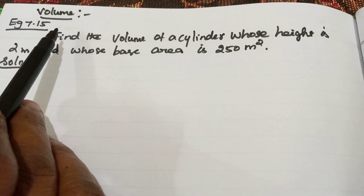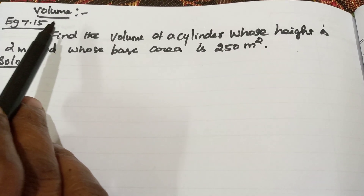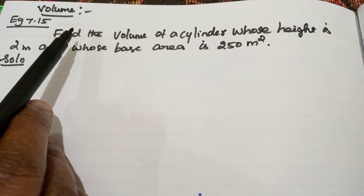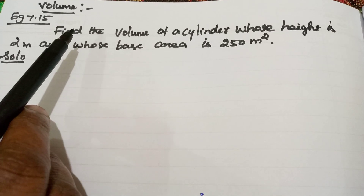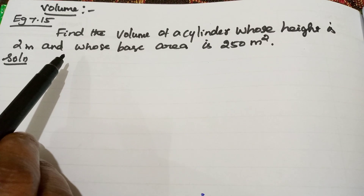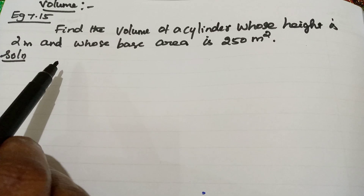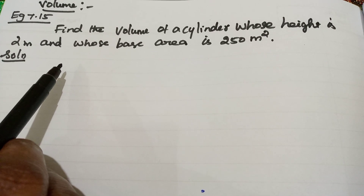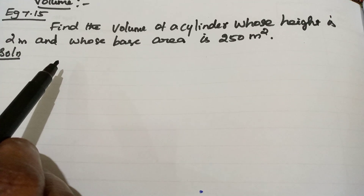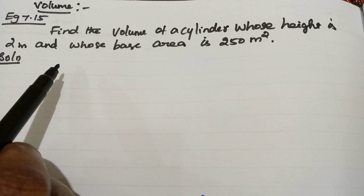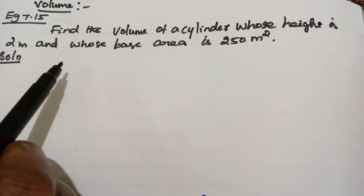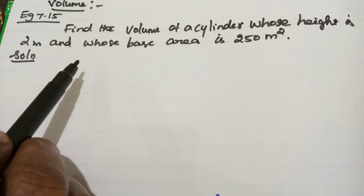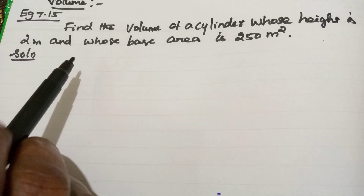Next topic is volume. The amount of space occupied by an object is known as volume. Volume is measured in cubic units. First we are going to learn about the volume of a cylinder. The formula for volume of cylinder is pi R square H, meaning the product of base area into height. Base area is pi R square and height is H.